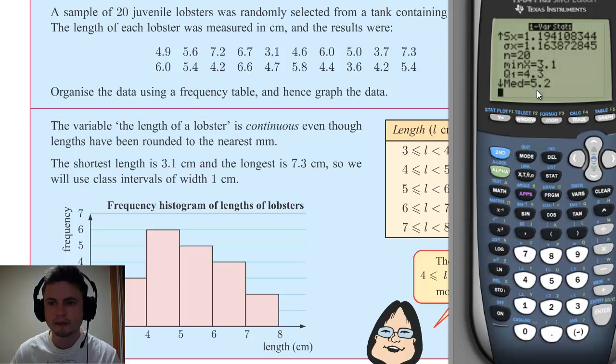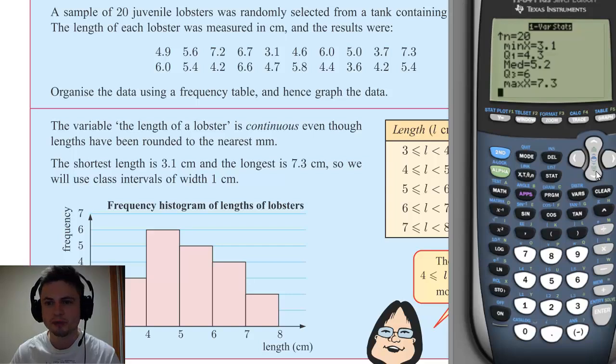4.2 is our range. Median is written right here, our median is 5.2. These two values, Q1 and Q3, I'm going to explain to you in the next video. This is related to something called box whisker plots, which we'll be doing very soon.